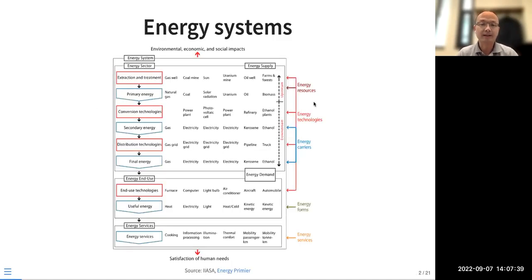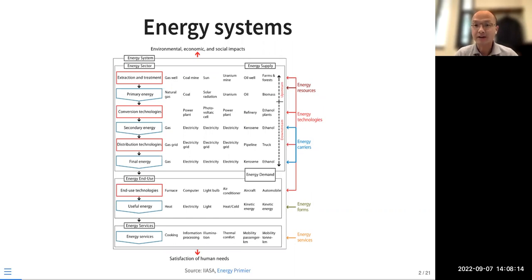This picture, which I like very much — I can talk about this picture for a day. The reason I like it is because it shows the big picture of our energy systems, from energy supply to energy demand, from different energy technologies and different energy sources to different energy services that we need. It relates to basically all the topics we will cover in the class, and it also shows the complexity of our energy systems.